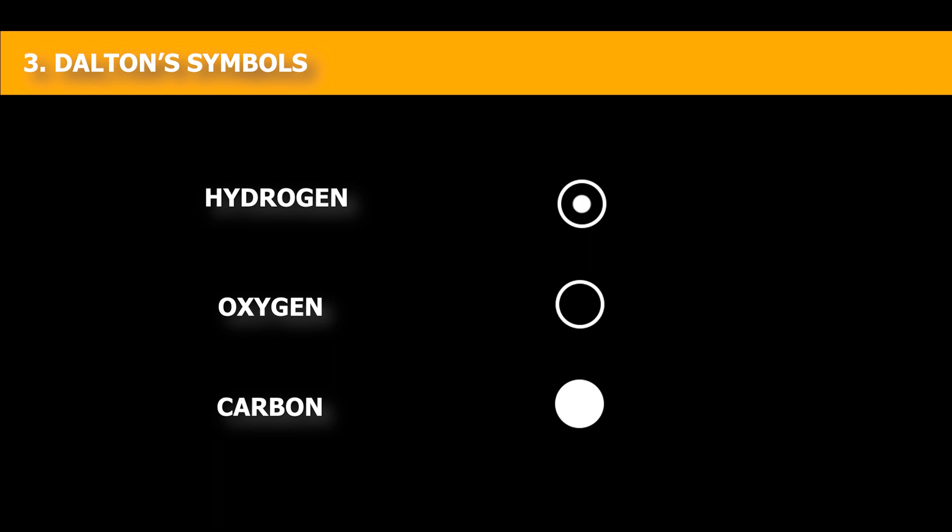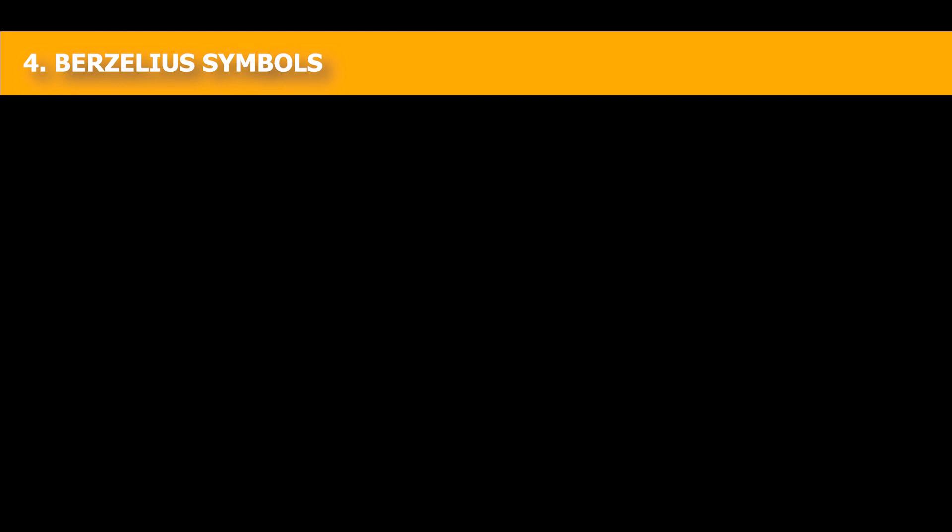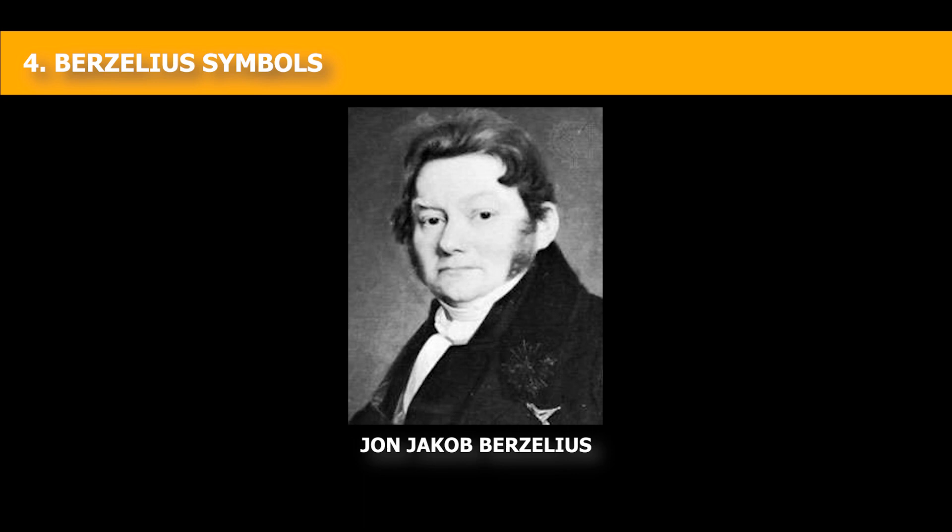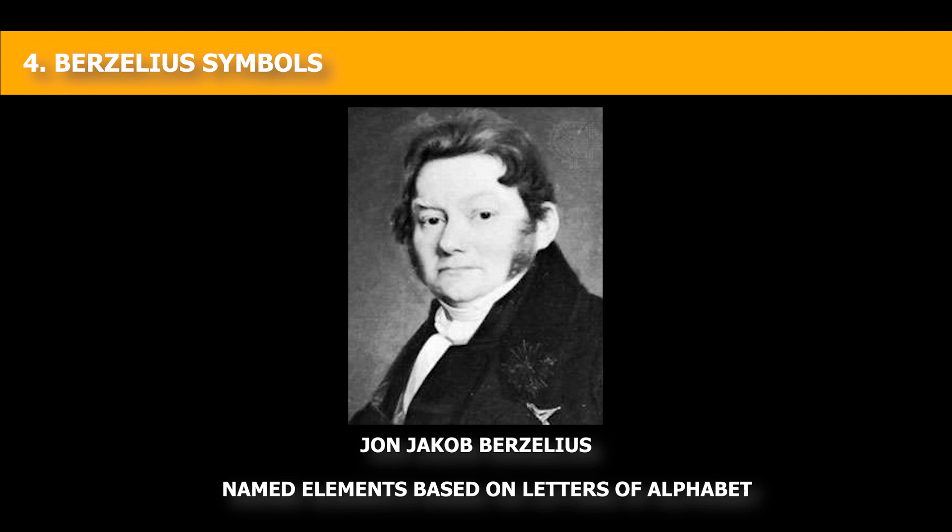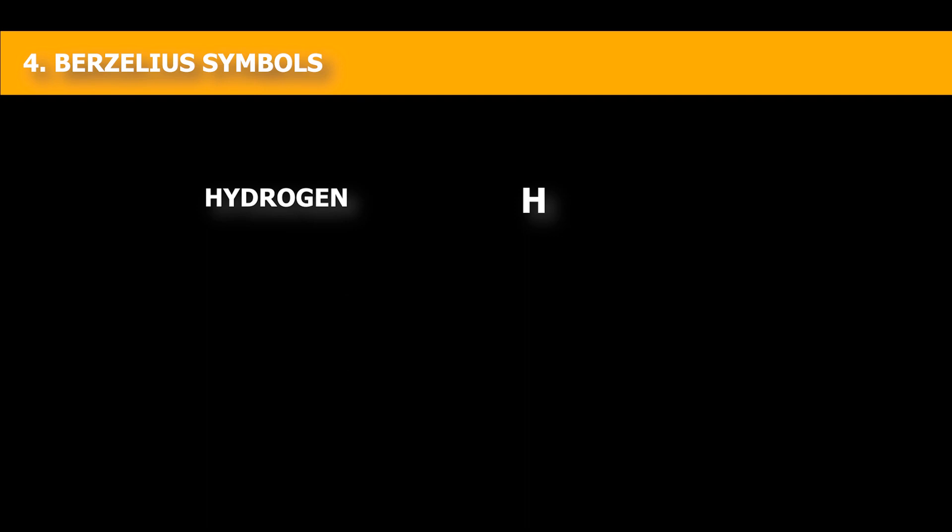4. Berzelius Symbols. In 1813, John Jacob Berzelius devised a system using letters of alphabet rather than signs. These symbols were easy to write and remember. For example, hydrogen element was represented as letter H. Oxygen element was represented as letter O. Helium was represented as letters HE.